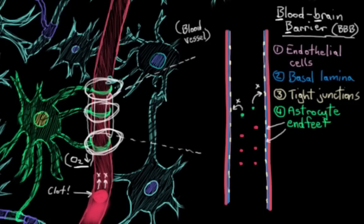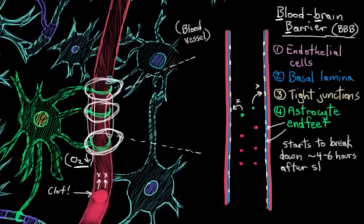Well, because about four to six hours after infarction, after you lose your oxygen supply to this part of the brain, your blood-brain barrier starts to break down. And two of the major reasons this happens is because of ischemia in the area and because of an inflammatory reaction that's going on post-stroke.